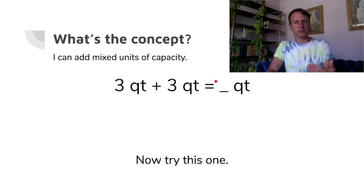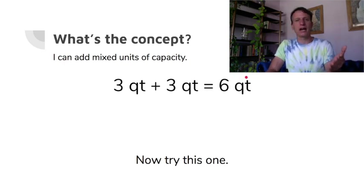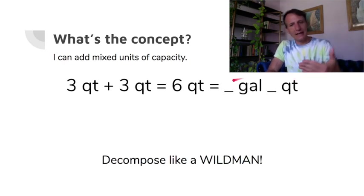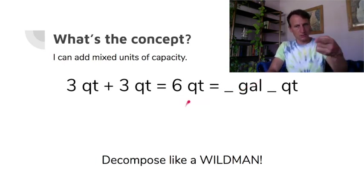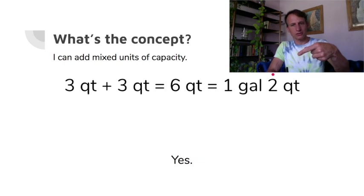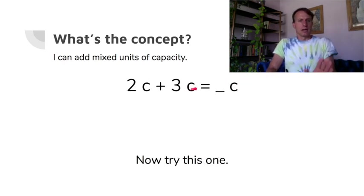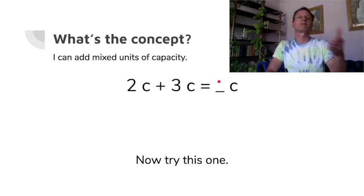Step it up a little: three quarts plus three quarts is six quarts. How many gallons and quarts? Pull out four quarts to make one gallon, leaving two quarts left over — so one gallon and two quarts.